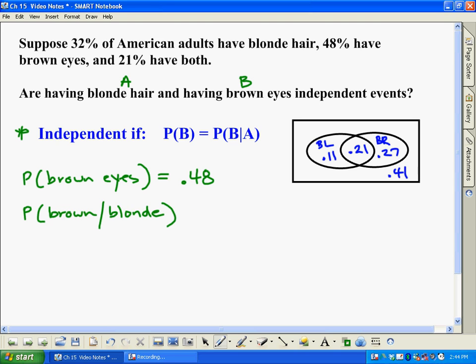And a moment ago we figured that out, but let's go ahead and do that again. So this is the given information down here. So the given blonde is a total of 32% over here. So that goes on the bottom. Both would be 0.21. And together that would end up being 0.656. So obviously these two answers here, 48%, and this answer over here, 65.6%, are not equal. So because 0.48 does not equal 0.656, these events are not independent.